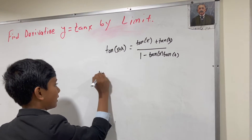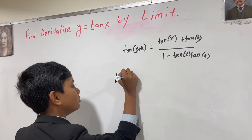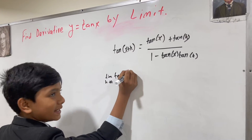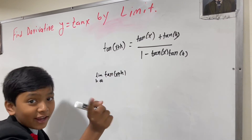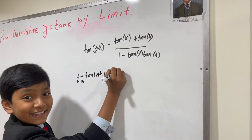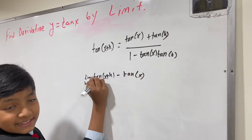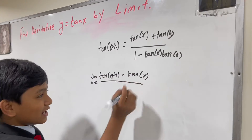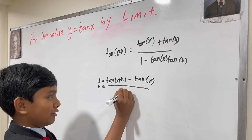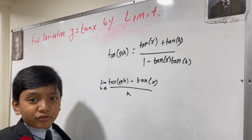So, we're taking the limit as h approaches zero of tan(x + h), right? And then we take minus tan of x. That's not actually what we're doing on its own — we're taking the limit of this entire fraction.